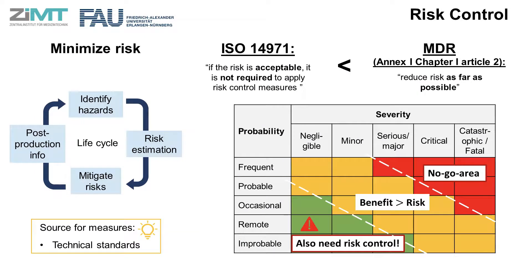The risks have been identified; the next step is to reduce them one by one. Risk control is the step about determining and implementing measures for reducing the risks. Technical standards can usually provide a good source for risk control measures. Although ISO 14971 states that if the risk is acceptable it is not required to apply risk control measures, the MDR requires the manufacturer to reduce risk as far as possible, in Annex 1, Chapter 1, Article 2. As a manufacturer on the market in the EU needs to meet the requirements of the MDR, risk control measures shall be applied to all risks, regardless of their initial acceptability.